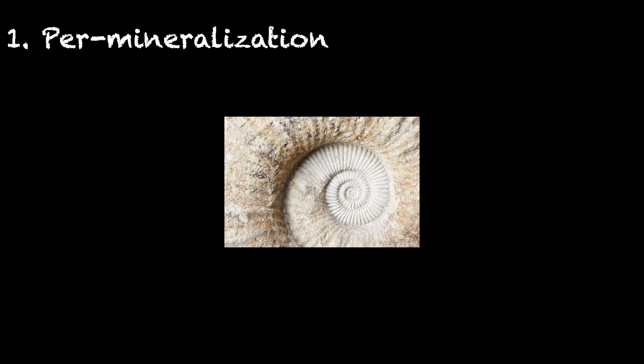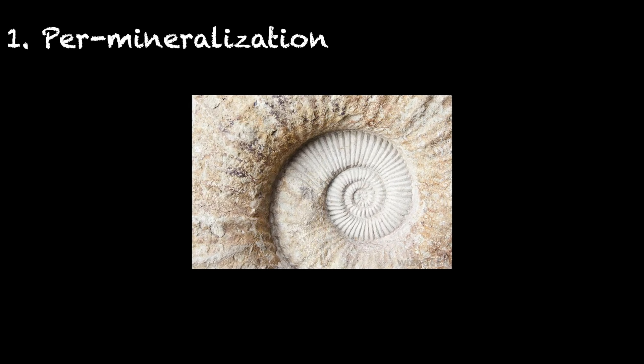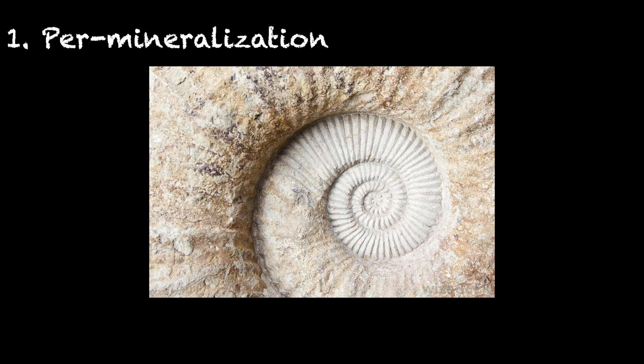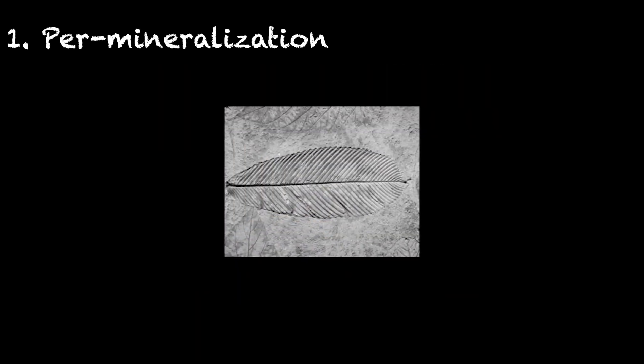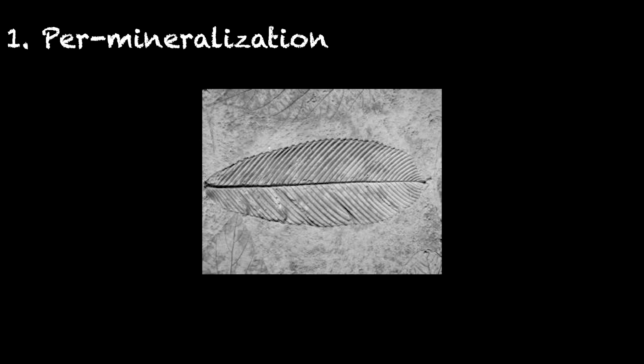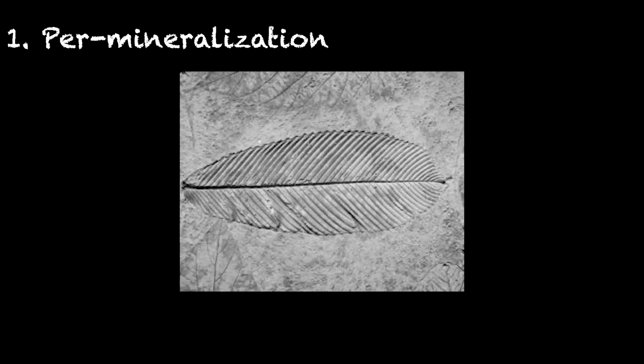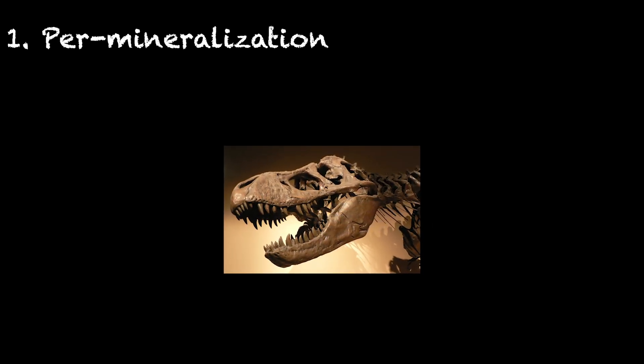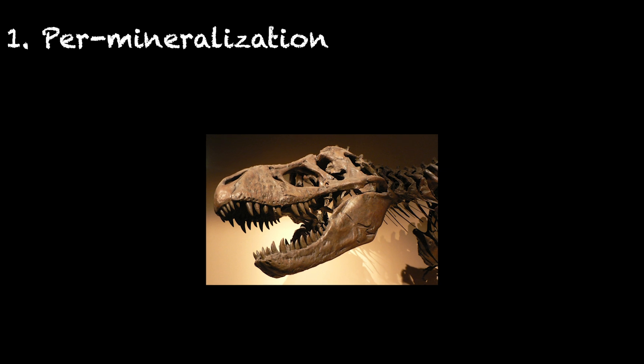First one is permineralization. It occurs when dissolved minerals carried by groundwater fill the cellular spaces of plants and animals. The dissolved minerals crystallize and produce rocks in the shape of an animal or plant. This is the most common type of fossil preservation.